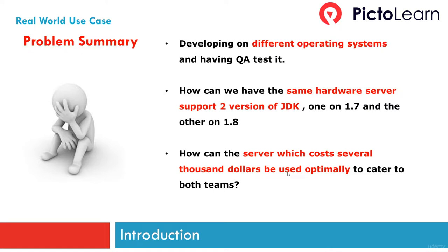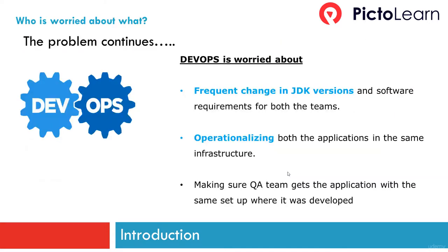Team B wants to upgrade JDK to 1.8 and Tomcat 8 and run CentOS in production. The problems: developing on different operating systems creates QA challenges, the same hardware needs to support two versions of JDK, and a server costs several thousand dollars so optimal usage is required. DevOps is worried about frequent changes in JDK versions, and operationalizing both applications on the same infrastructure is a huge challenge.